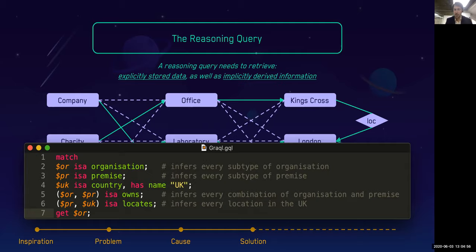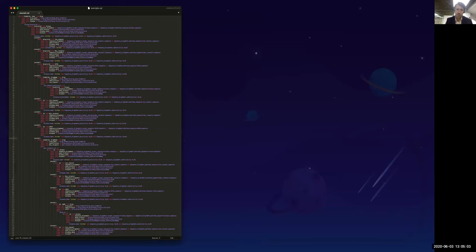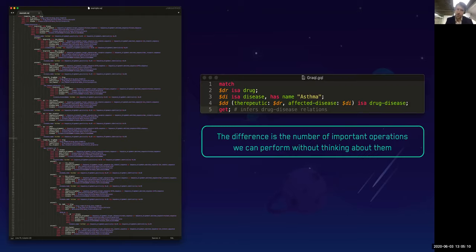If we query for every premise which would infer all these premises, and we query for the country UK, then we simply say give me any connection between organization and premise. We just simply create this loop in an owns relation. Then we just simply say premise is connected to the UK. But because of the transitivity rule that we would have created, it would basically infer all the locations in the UK. This is an example that is still fairly low level or simple. Going back to the earlier SQL query I showed, the reason why you would want to use something like Graken is because the query on the left in Graken would look like the query on the right.